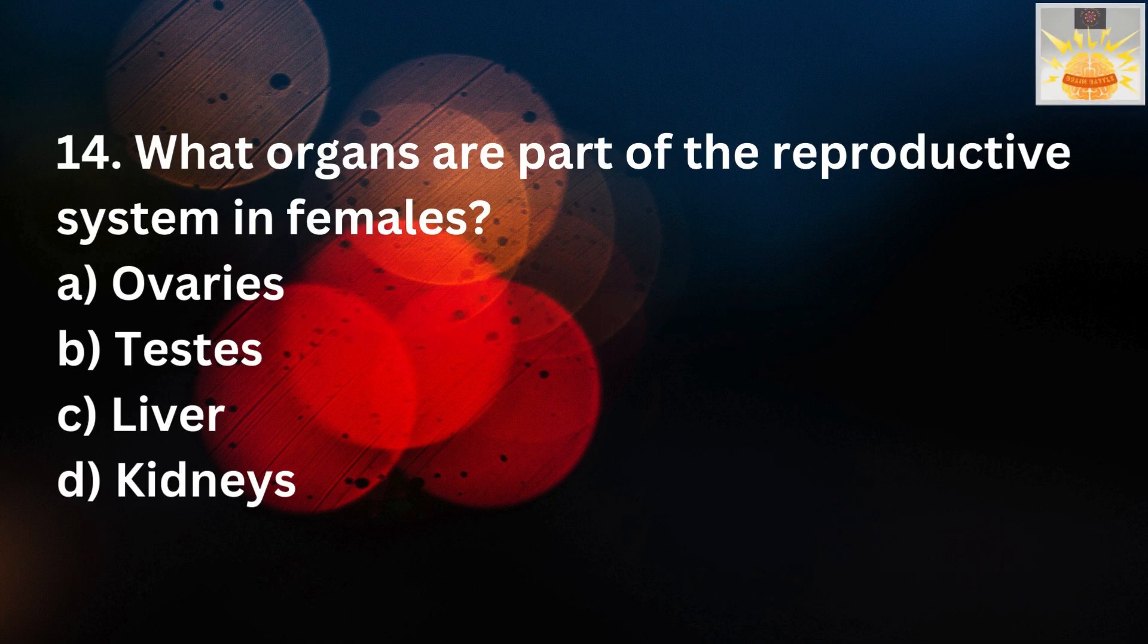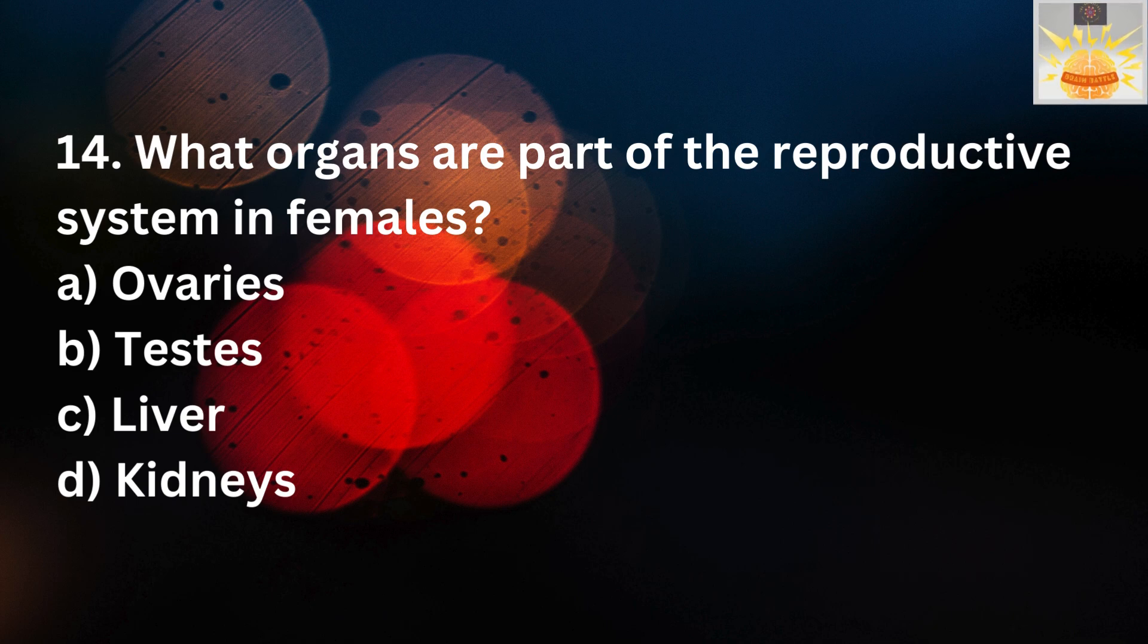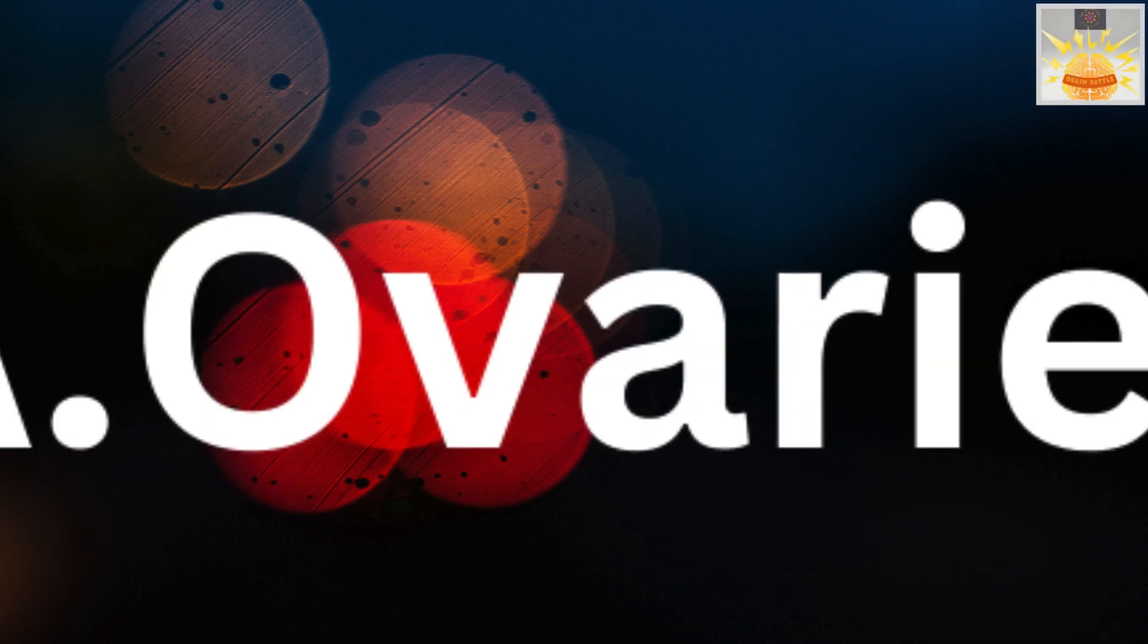Thank you, Rachel. Okay, question 14. What organs are part of the reproductive system in females? A. Ovaries. Testes. Liver. Kidneys. The right answer is A. Ovaries.